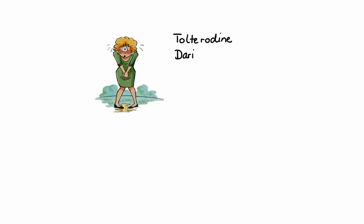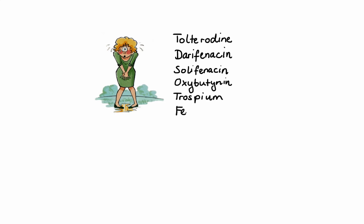Other medications in this group are used for treatment of overactive bladder. These include tolterodine, darifenacin, solifenacin, oxybutynin, trospium, and fesoterodine. These agents have varying selectivity for the M3 receptor, which is the main receptor involved in bladder function. However, the overall efficacy among all of them is very similar.